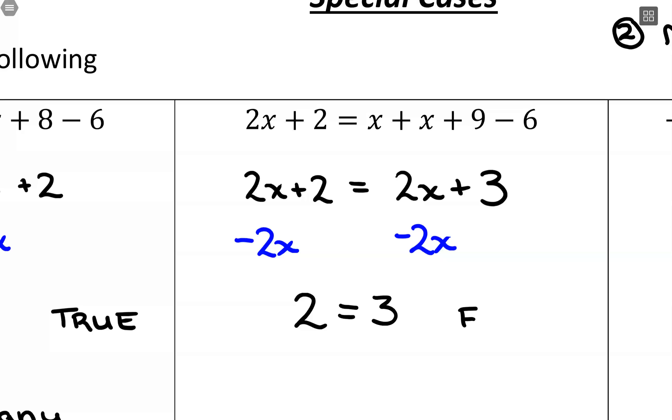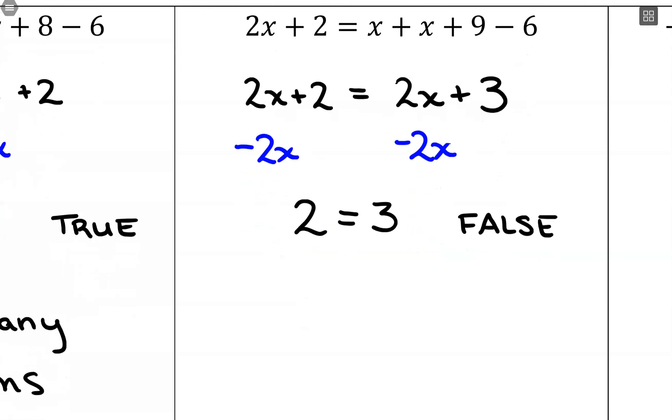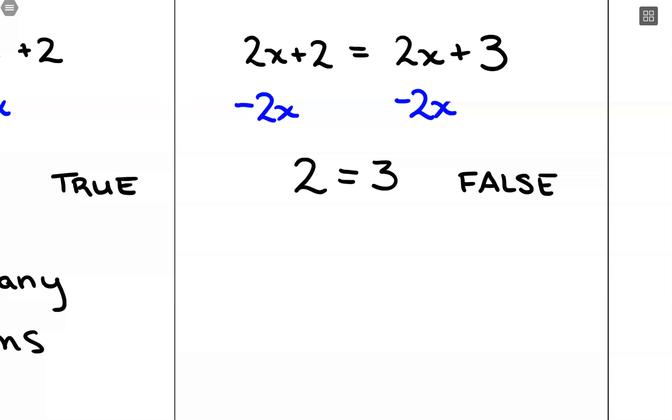And that is a false statement. So my variable terms disappeared, they all canceled out with each other, and I'm left with something that is false. That means there are no solutions. Absolutely no real number would work to balance that equation.